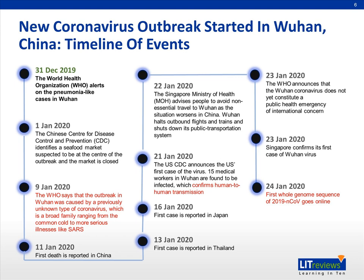In Singapore, on January 22nd, the Ministry of Health advised people to avoid non-essential travel to Wuhan. Another important event was the Wuhan government quarantining the entire city of 11 million people — unprecedented in human history. On January 23rd, WHO organized its first emergency meeting but decided not to declare a public health emergency based on limited transmission outside China. Singapore confirmed its first case of the Wuhan virus, and we already have 10 confirmed cases. On January 24th, the first whole genome sequence of this new coronavirus went online, greatly facilitating development of diagnostics, vaccines, and other measures essential for outbreak response and prevention of future outbreaks.